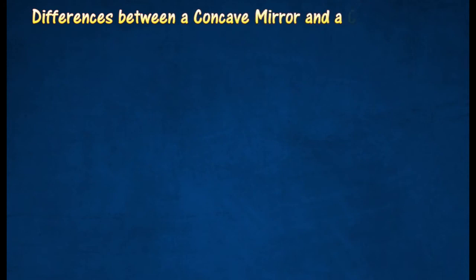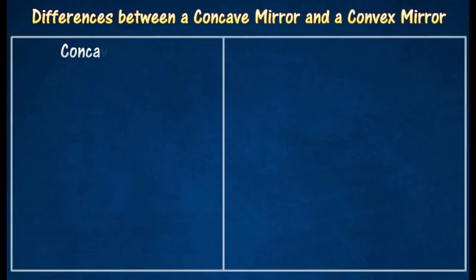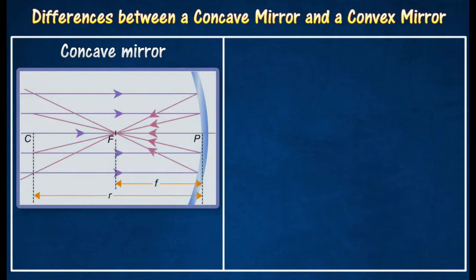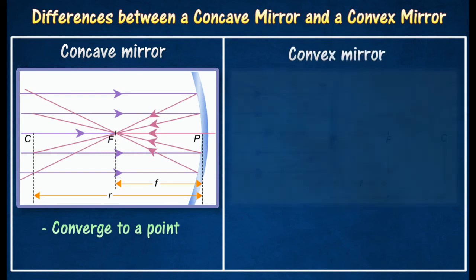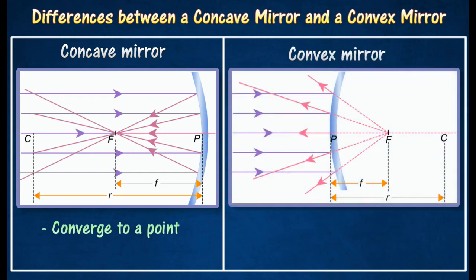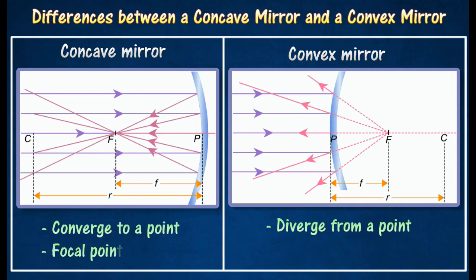Differences between a concave mirror and a convex mirror. For a concave mirror, rays traveling parallel to the principal axis converge to a point called the real principal focus on the principal axis. For a convex mirror, rays traveling parallel to the principal axis appear to diverge from a point behind the mirror; this point, which lies on the principal axis, is called the virtual principal focus. The focal length of a concave mirror is the distance between the real principal focus and the pole of the mirror, while for a convex mirror it is the distance between the virtual principal focus and the pole of the mirror.